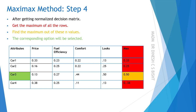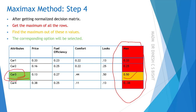Step 4 is changed for the Maximax method. Here, we get the maximum of all rows, because an optimistic decision maker always considers maximum values. In the first row, maximum is 0.33; second row, maximum is 0.25; third row, maximum is 0.50; fourth row, maximum is 0.38. Then we select the maximum of these maximums, which is 0.50, and the corresponding option — car 3 — is selected. That's it, thank you.